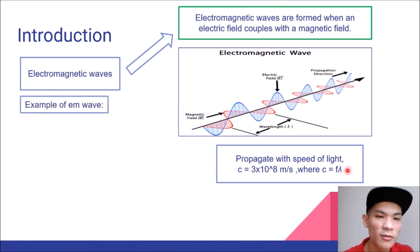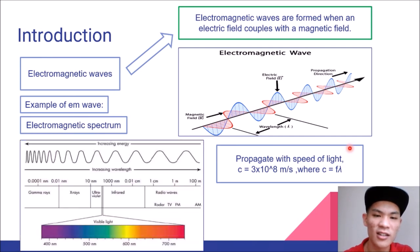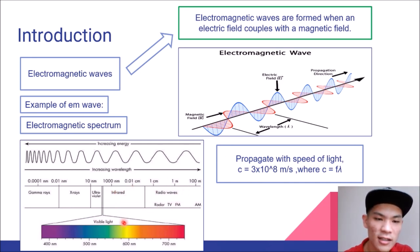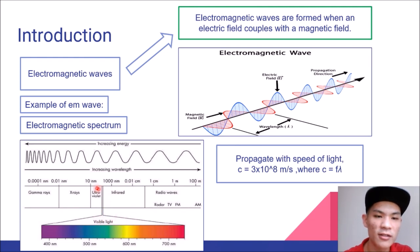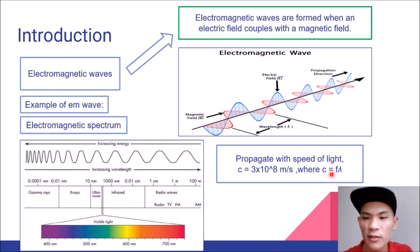For examples of electromagnetic waves, we can get the answer through the electromagnetic spectrum diagram. We see radio waves, infrared waves, and even light is also one of the electromagnetic waves. We also have UV light, X-ray, and gamma ray as examples of electromagnetic waves.